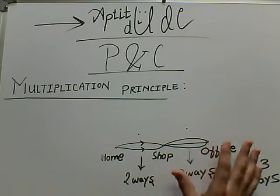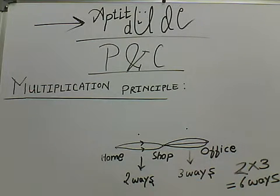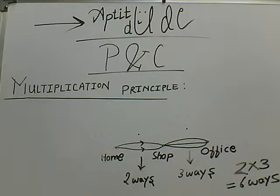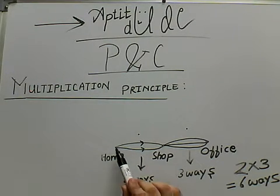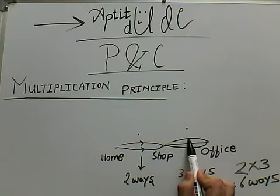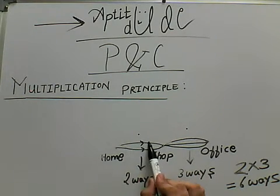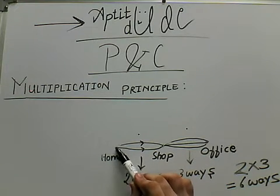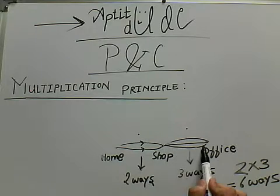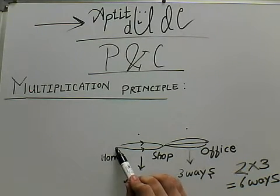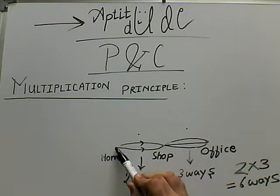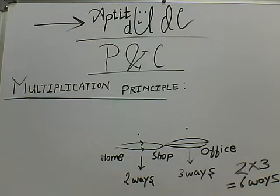Now let's verify this with simple logical thinking. We need to find the number of paths from my home to the office. The first path would be like this, the second path like this, the third path like this, the fourth path like this, the fifth path like this, and the sixth path like this. So these are the total 6 ways in which I can go from my home to the office.